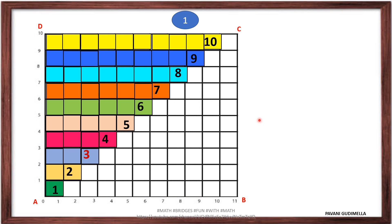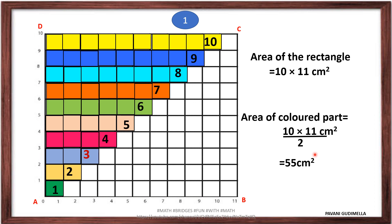Now if we consider the area of this rectangle, it will be 10 × 11 cm square. If we take area of only the colored part, only this colored part we have seen in the previous slides, it is exactly half of the complete area, complete grid. So we can take it to be as 10 × 11 cm square by 2, which is equals to 55 cm square.